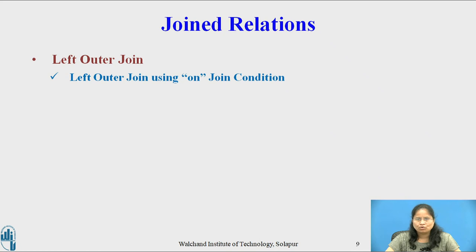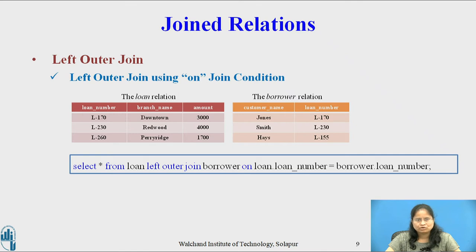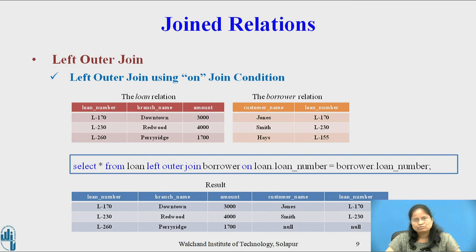Consider the left outer join using the ON join condition. The ON condition allows a general predicate over the relations being joined. For loan and borrower, the query is: SELECT * FROM loan LEFT OUTER JOIN borrower ON loan.loan_number = borrower.loan_number. Note that ON and WHERE behave differently for outer joins, because outer join adds null-padded tuples only for those tuples that do not contribute to the corresponding inner join. The ON condition is part of the outer join specification, but a WHERE clause is not. In the result, the common attribute loan number appears twice, and the tuple for L260 includes null for customer name and loan number from the borrower schema.